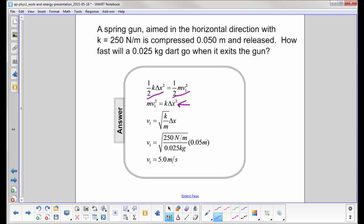So you have the square root of k over m times delta x. At this point, you substitute in the values, and you wind up with the velocity of 5.0 meters per second.